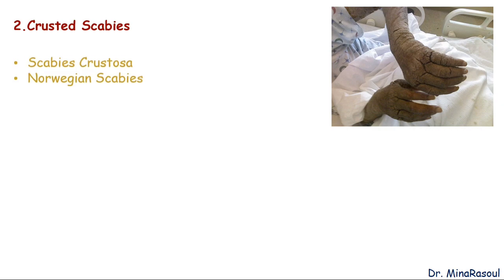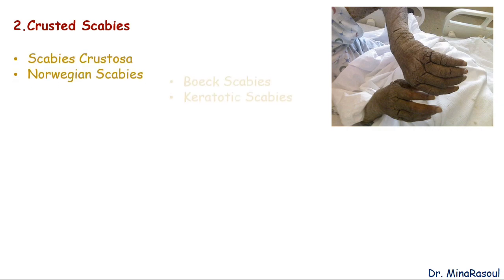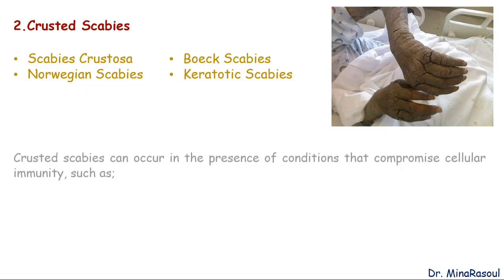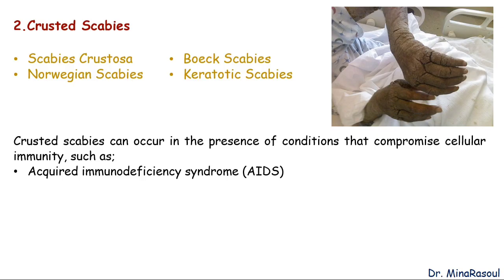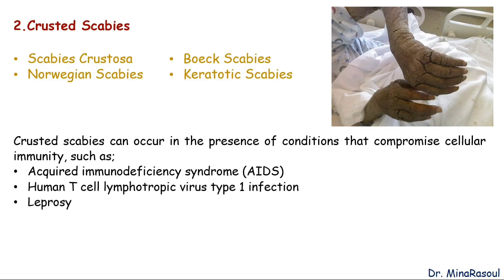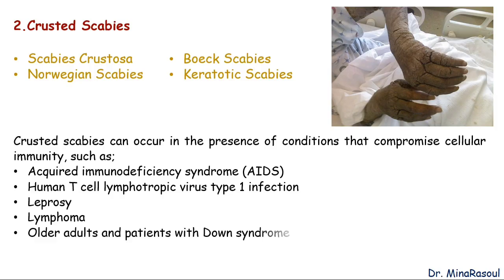Crusted scabies is another type of scabies, also known as scabies crustosa, Norwegian scabies, boke scabies, or keratotic scabies. Crusted scabies can occur in the presence of conditions that compromise cellular immunity, such as acquired immunodeficiency syndrome, human T-cell lymphotropic virus type 1 infection, leprosy, lymphoma, in older adults, and in patients with Down syndrome.